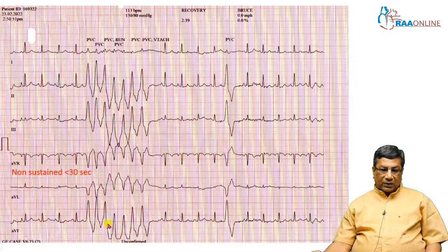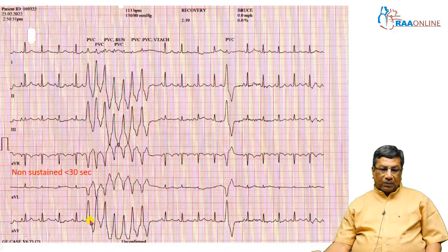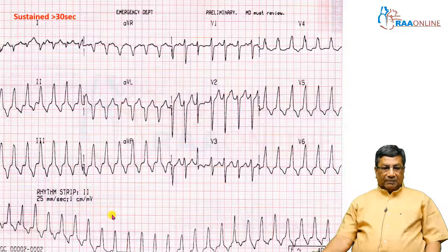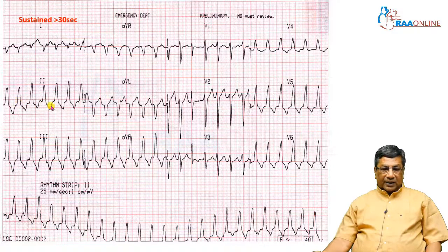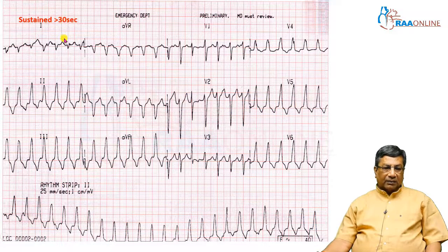Once you have a wide QRS complex tachycardia, it is called non-sustained when it lasts less than 30 seconds — a bout of tachycardia, then sinus rhythm, then tachycardia again. A sustained wide QRS complex tachycardia is one that sustains more than 30 seconds, continuing for many minutes or hours.